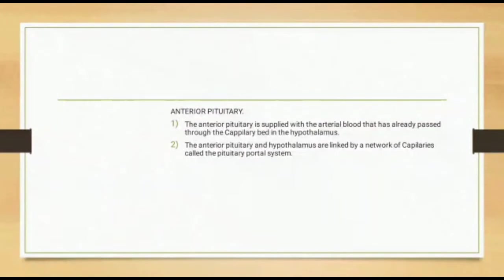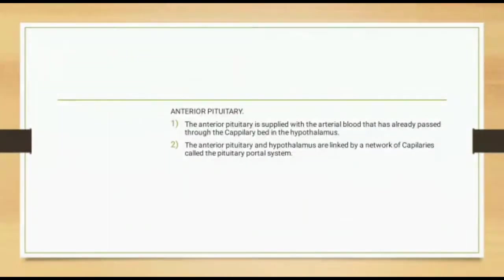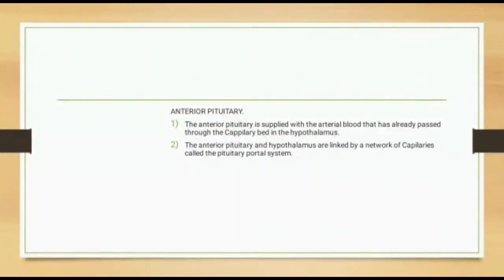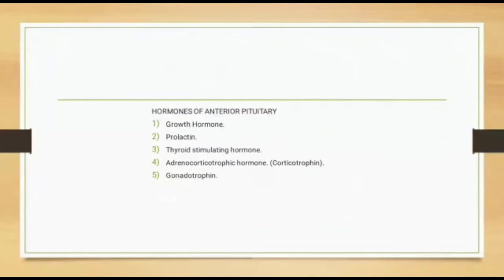The anterior pituitary is supplied with arterial blood that has already passed through the capillary bed in the hypothalamus. The anterior pituitary and hypothalamus are linked by a network of capillaries called the pituitary portal system, which transports substances from the hypothalamus to the anterior pituitary through a tiny network of sinusoids.